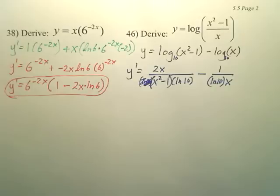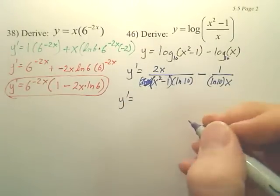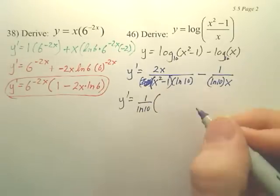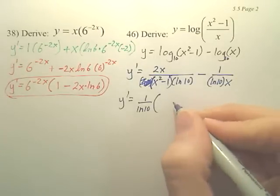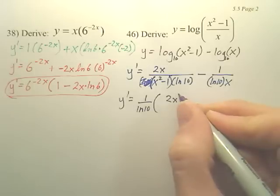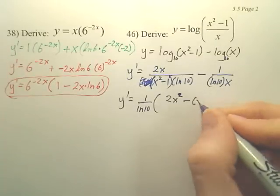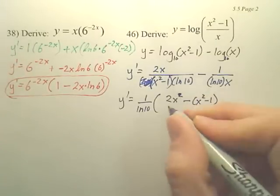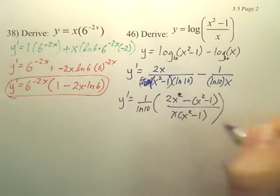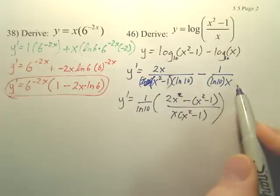If I were to simplify this down, y prime would probably be 1 over ln 10 times 2x squared minus x squared minus 1 over x times x squared minus 1. I got a common denominator. I multiplied this one by x over x and this one by x squared minus 1 over x squared minus 1.